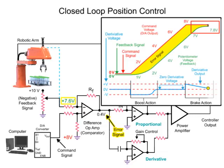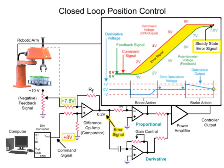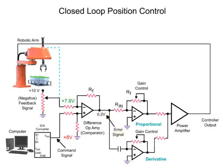Friction and mass of the robotic arm contribute to the system negatively, where the robotic arm fails to reach the desired position. With a reduced error signal due to feedback voltage and command voltage not being equal, a steady-state error condition exists. In this condition, the difference op-amp creates a steady voltage and the arm continues to move.